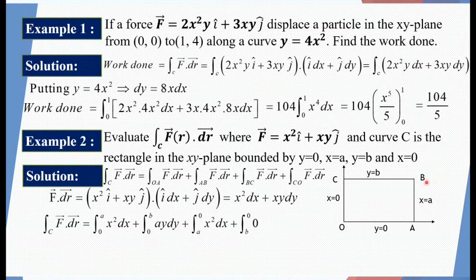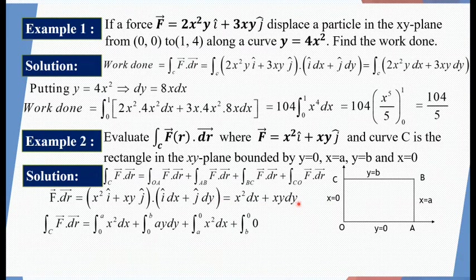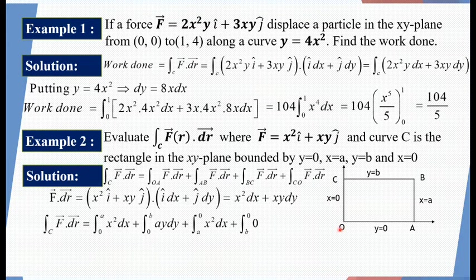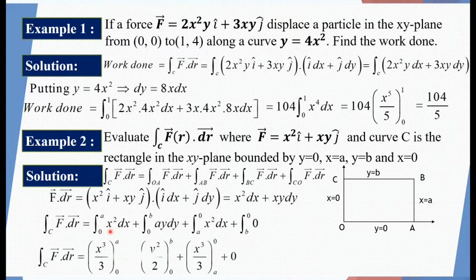Along CO: x equals 0 so dx equals 0. When x equals 0, the entire vector F dot dr becomes zero, so the integral from b to 0 of 0 vanishes. Evaluating the remaining integrals: x³/3 from 0 to a, plus a·y²/2 from 0 to b, plus x³/3 from a to 0, plus 0.